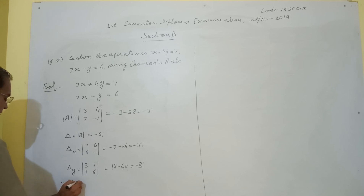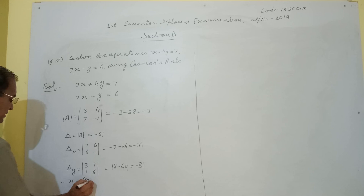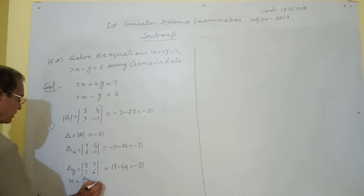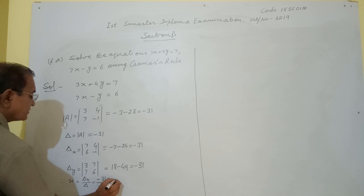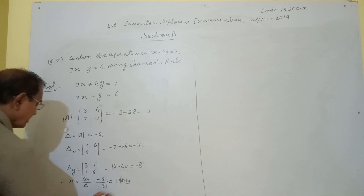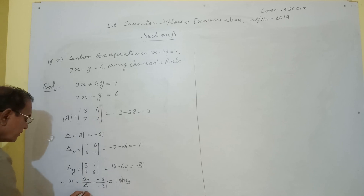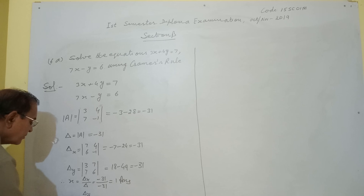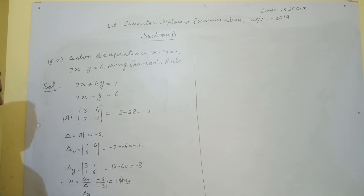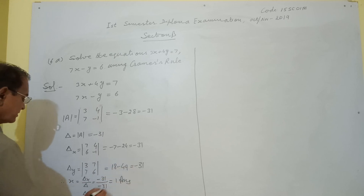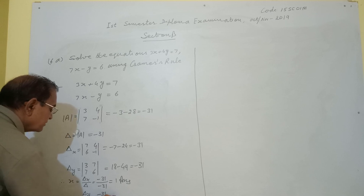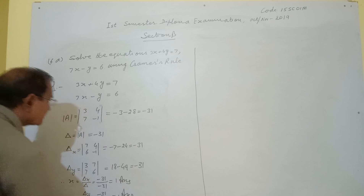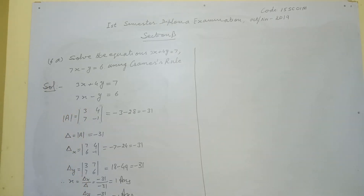Therefore, x = Δx / Δ = -31 / -31 = 1, and y = Δy / Δ = -31 / -31 = 1. So x = 1 and y = 1.